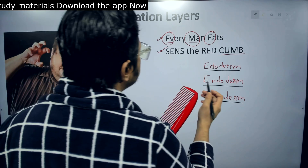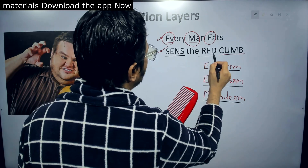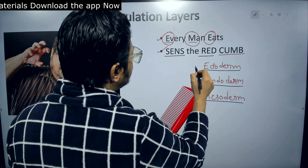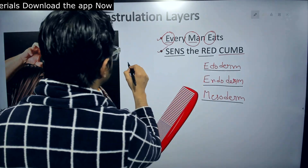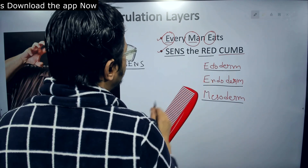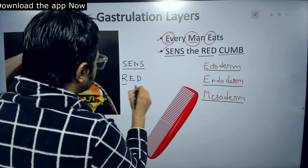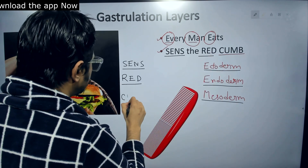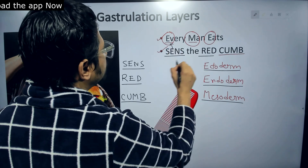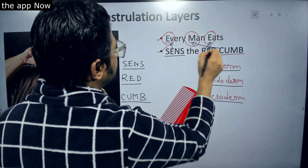Now, the word SENS — all letters in capitals — goes with ectoderm. RED — all in capitals — goes with endoderm. And CUMB — all in capitals — goes with mesoderm. So: SENS is with ectoderm, RED is with endoderm, and CUMB is with mesoderm.